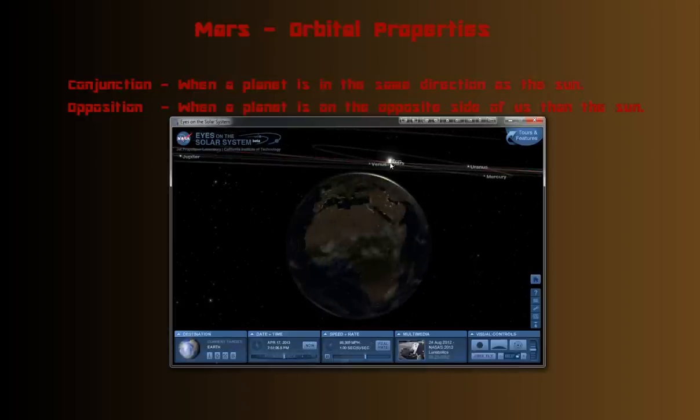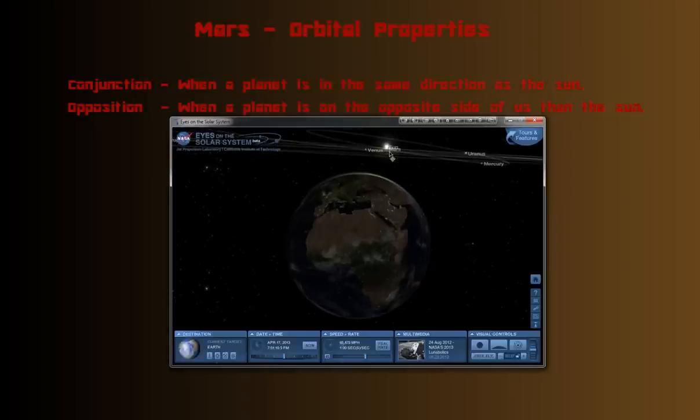Right there. See how Mars and the Sun are almost overlapping? That means Mars is in the same direction as the Sun when we look at the Sun. We're looking at the Sun, and Mars is in the same direction. Even though it's on the opposite side of the Sun as us, it's in the same direction as the Sun. So that's conjunction.